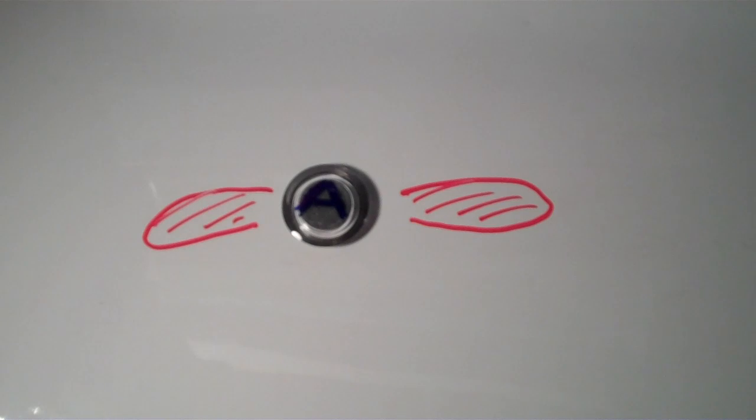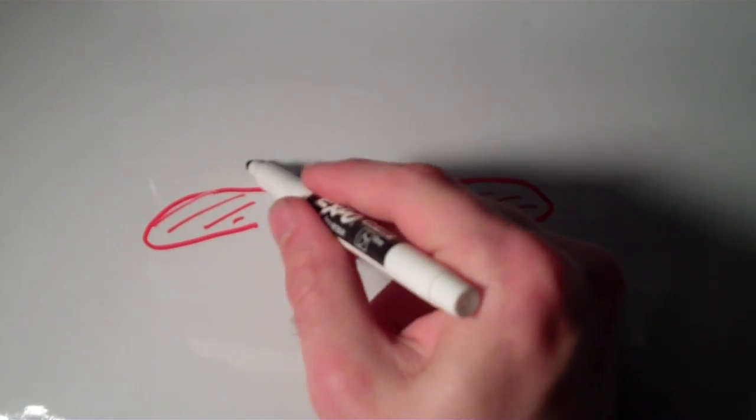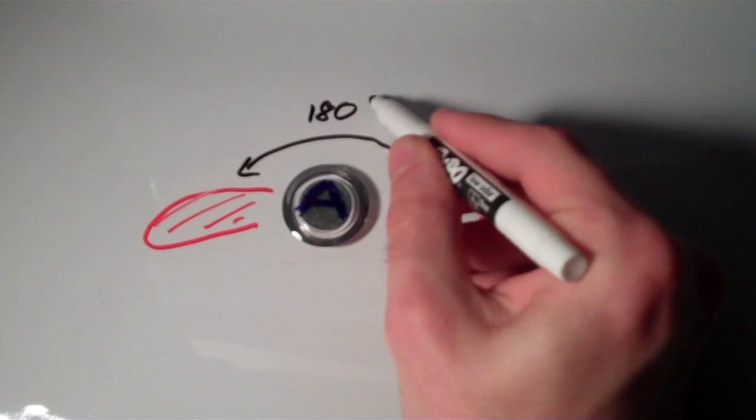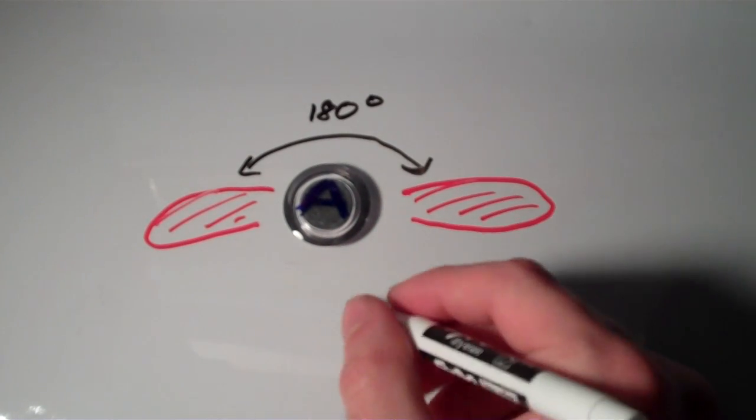The angle between the two electron groups is 180 degrees. And this shape is called linear.